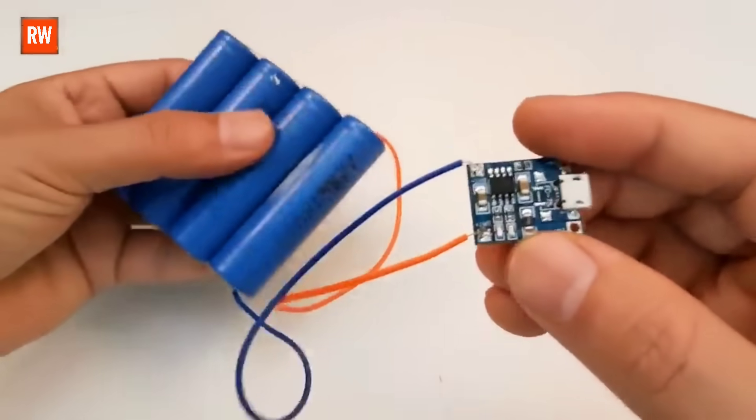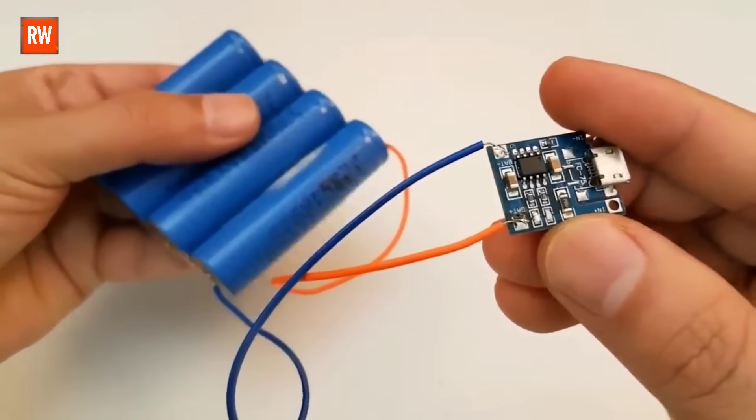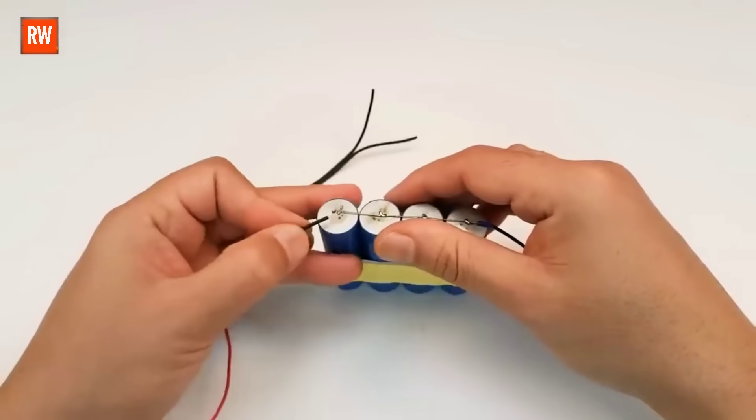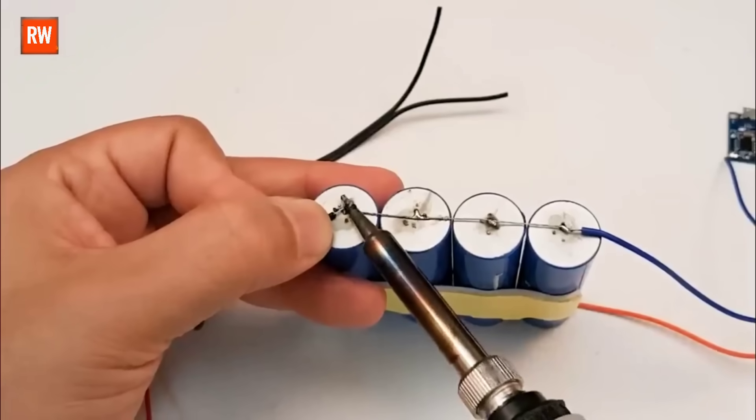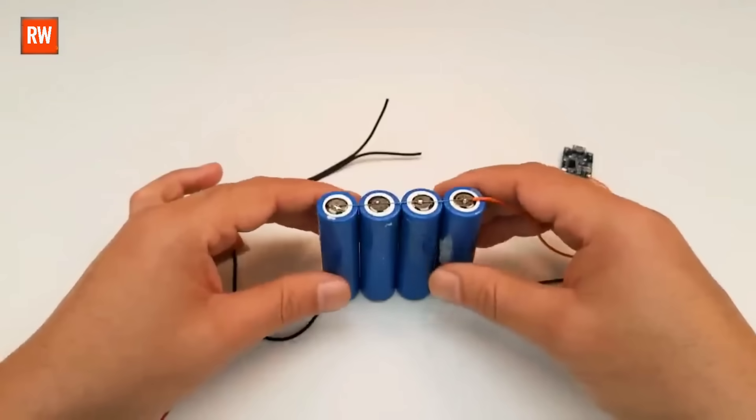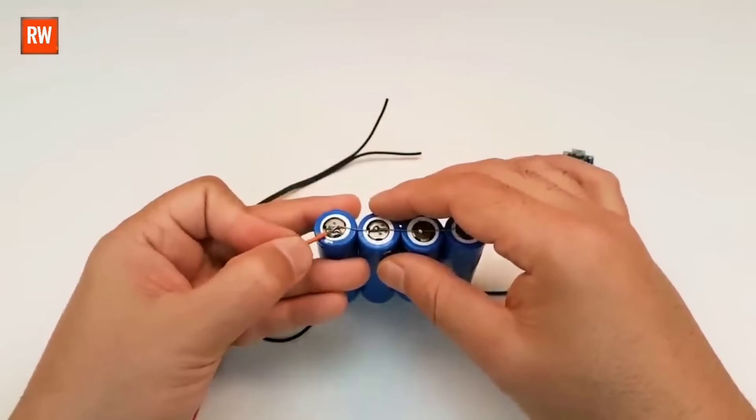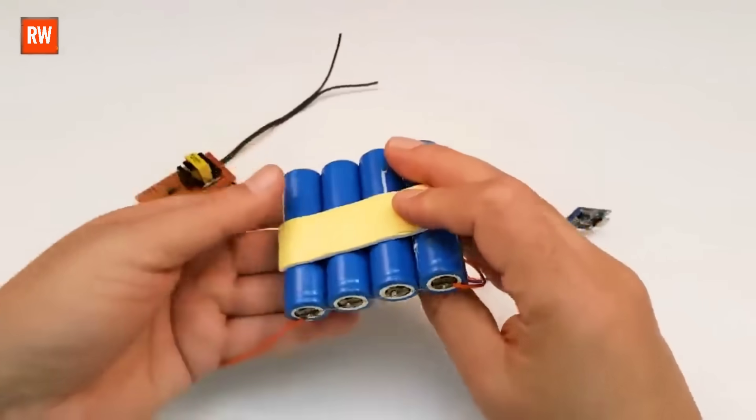Once all these power-related connections are complete, we'll move on to the final step, completing the connections on the PCB. This includes linking all the main components, making sure the tracks are properly aligned, and everything is neatly soldered for efficient current flow. So let's jump right in.